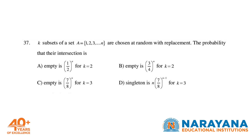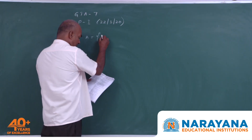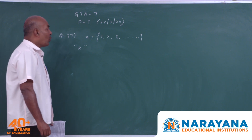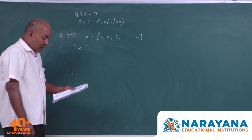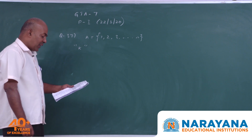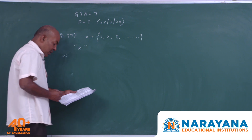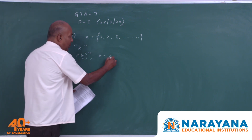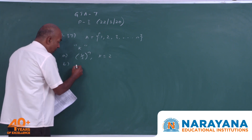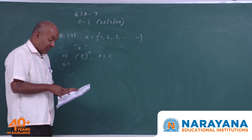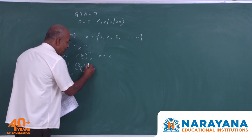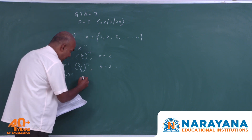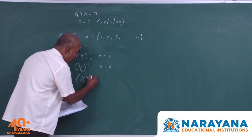Question 37 says that k subsets of a set A containing elements 1, 2, 3 up to N are made. The probability that their intersection is empty is (3/4)^N when k equals 2, and the option C says the probability that their intersection is empty is (7/8)^N when k equals 3.